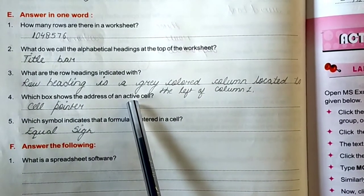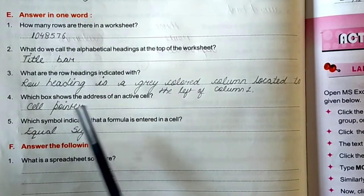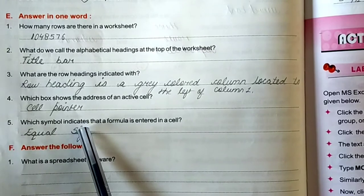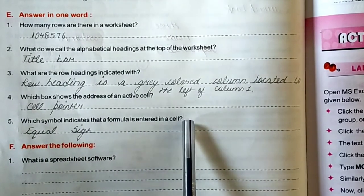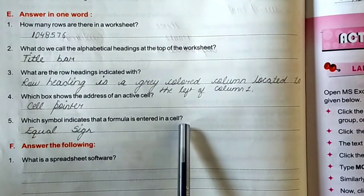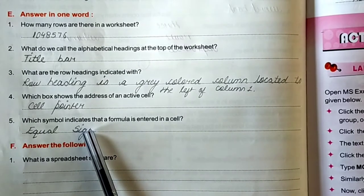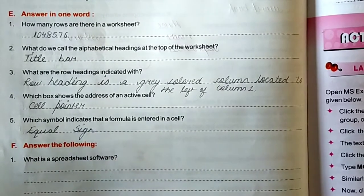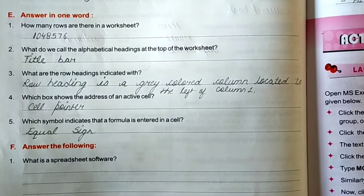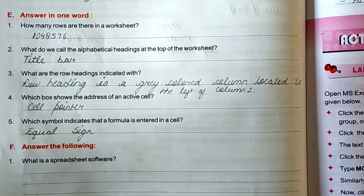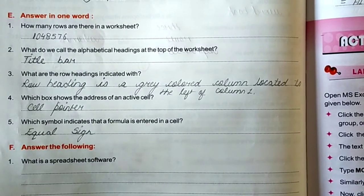Which box shows the address of an active cell? That is cell pointer. And the last one is, which symbol indicates that a formula is entered in a cell? Equal sign indicates that formula is entered in the cell. When you enter a formula, you apply equal sign before entering the formula.